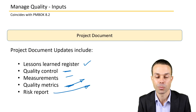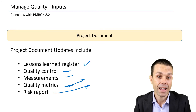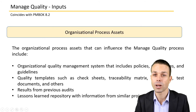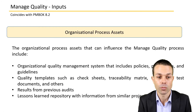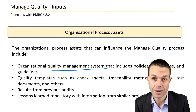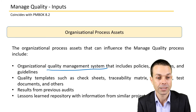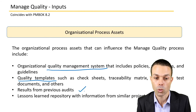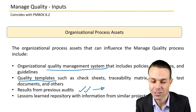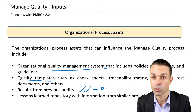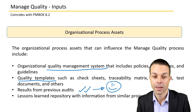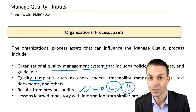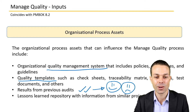The risk report is also an input — any risks we need to be aware of and how they feed into the quality of the deliverable. Organizational process assets might include an existing organizational quality management system, existing quality templates, and results from previous audits. Audits are more about the process: did a previous project follow the correct process? We can copy a good outcome or be warned against a bad one, along with lessons learned from similar projects.